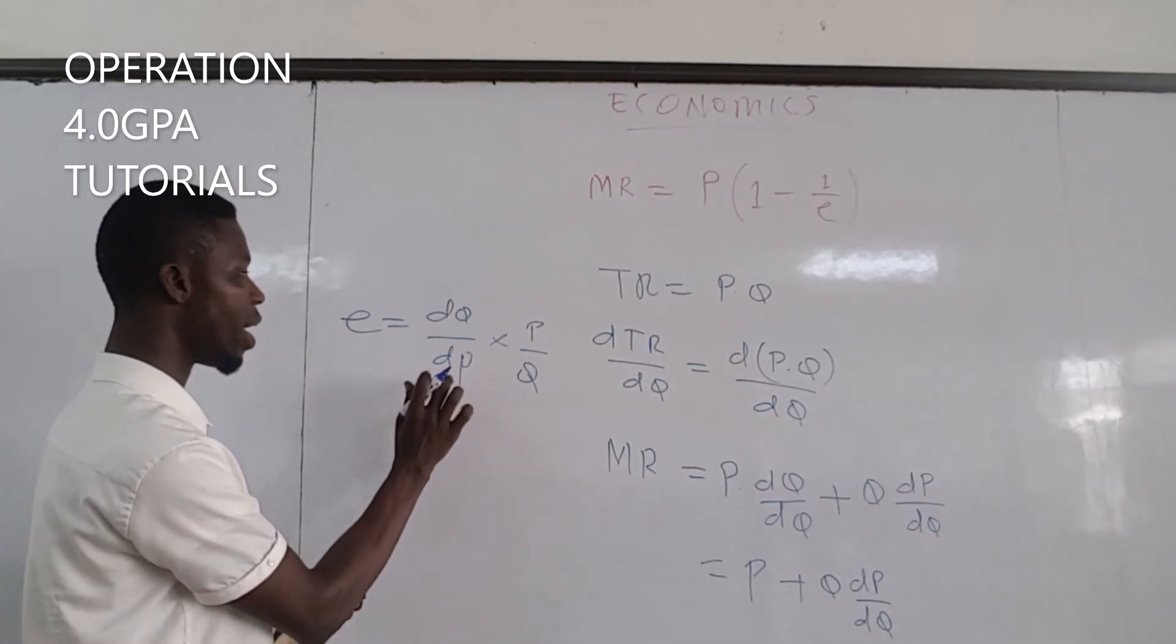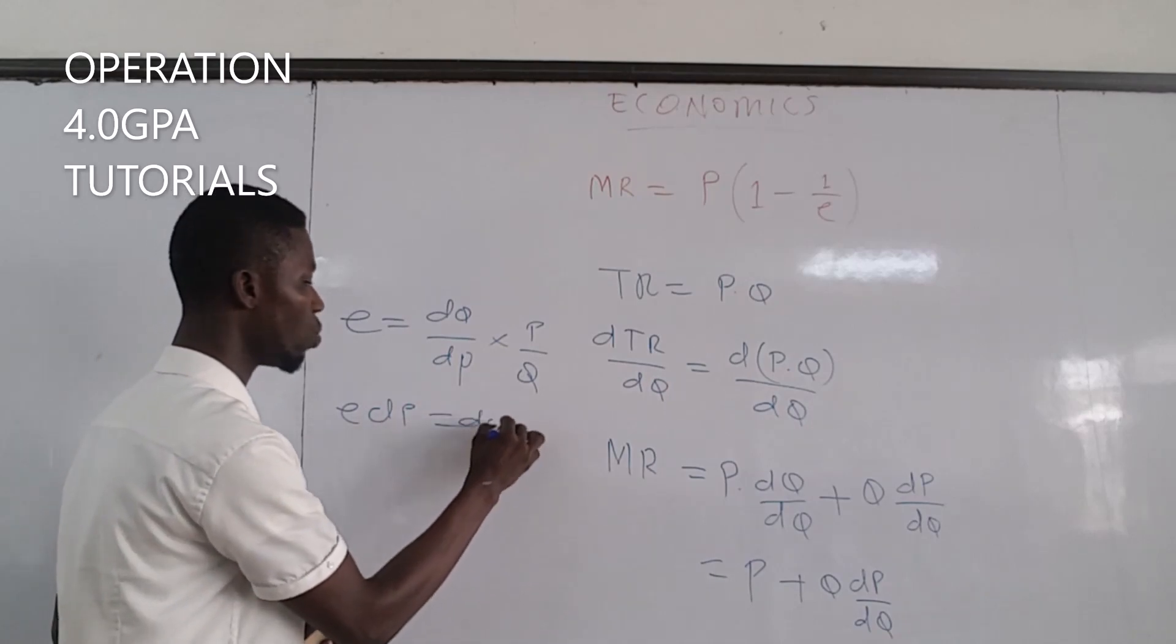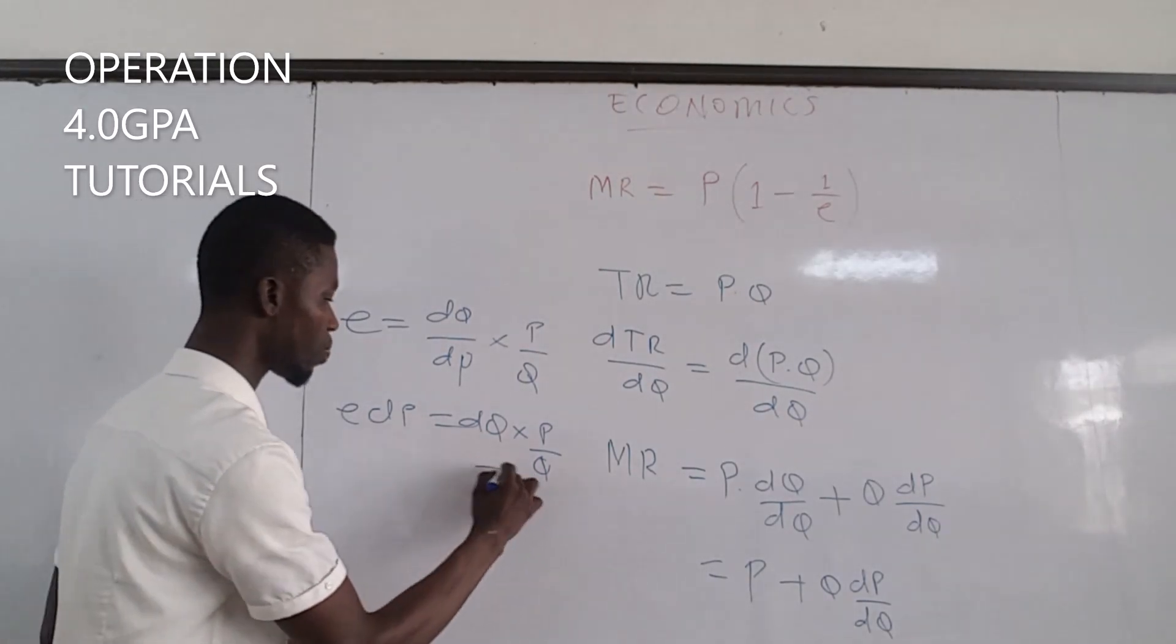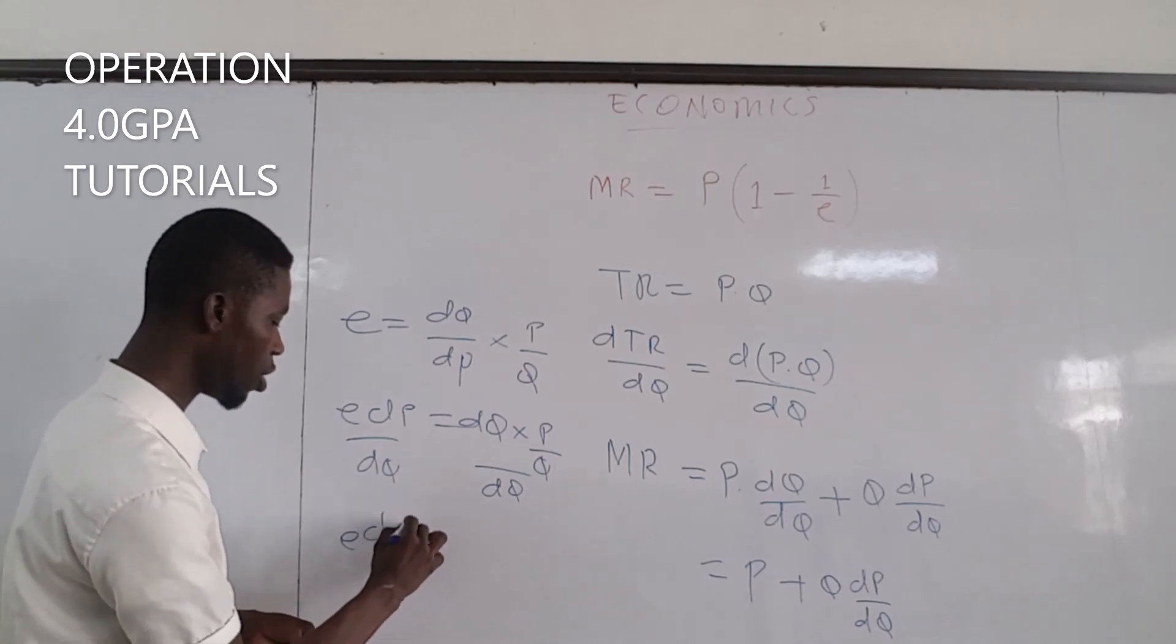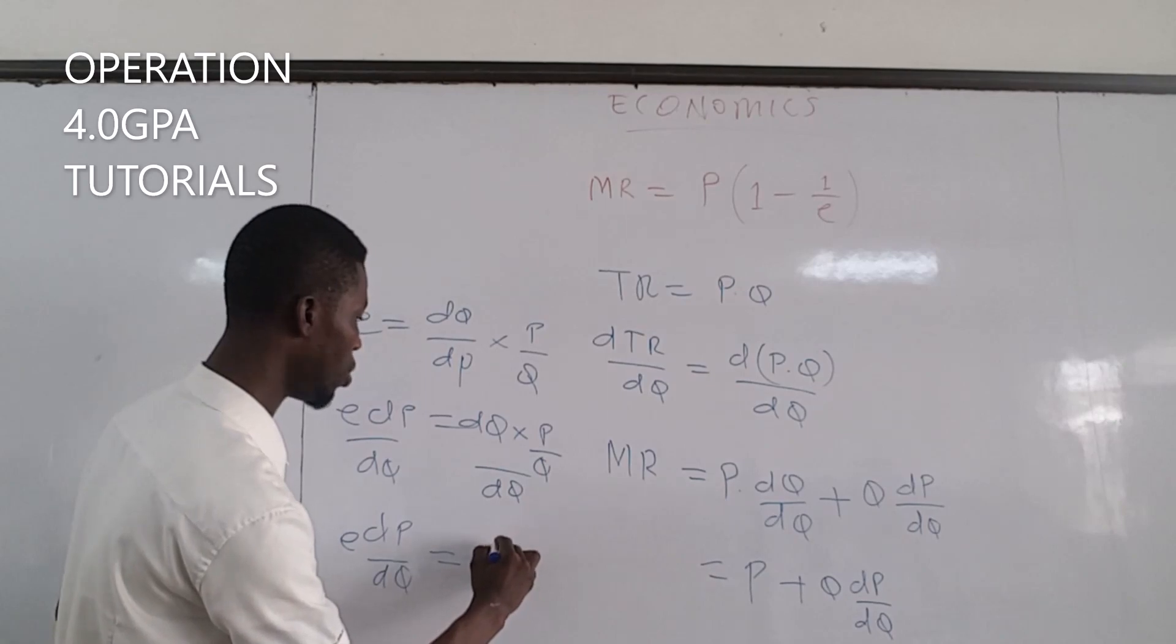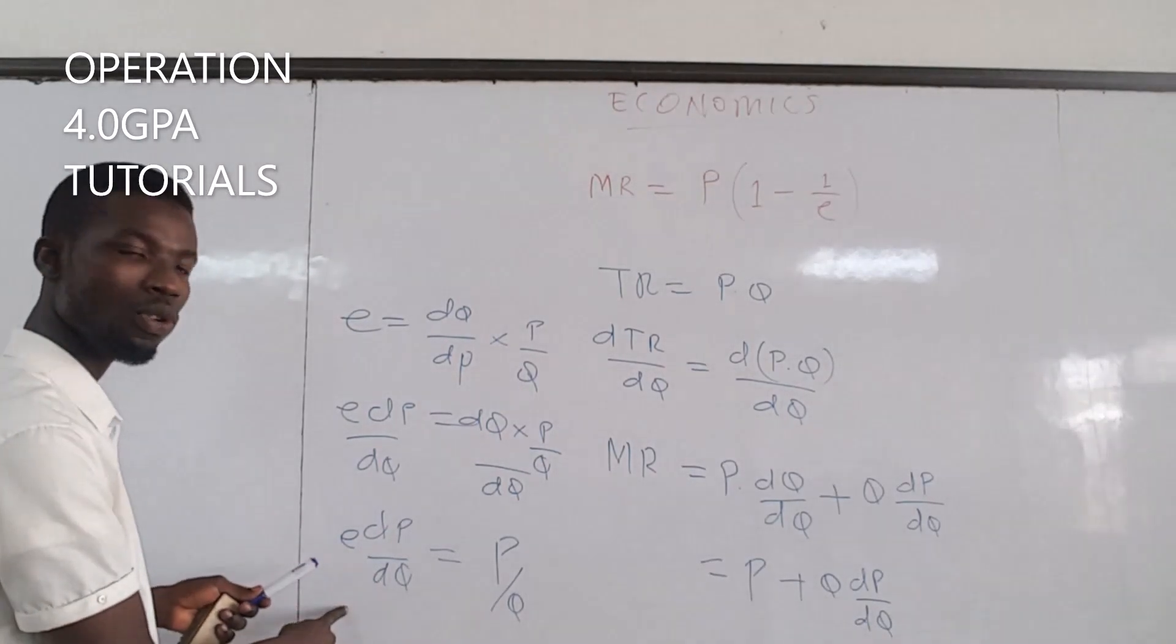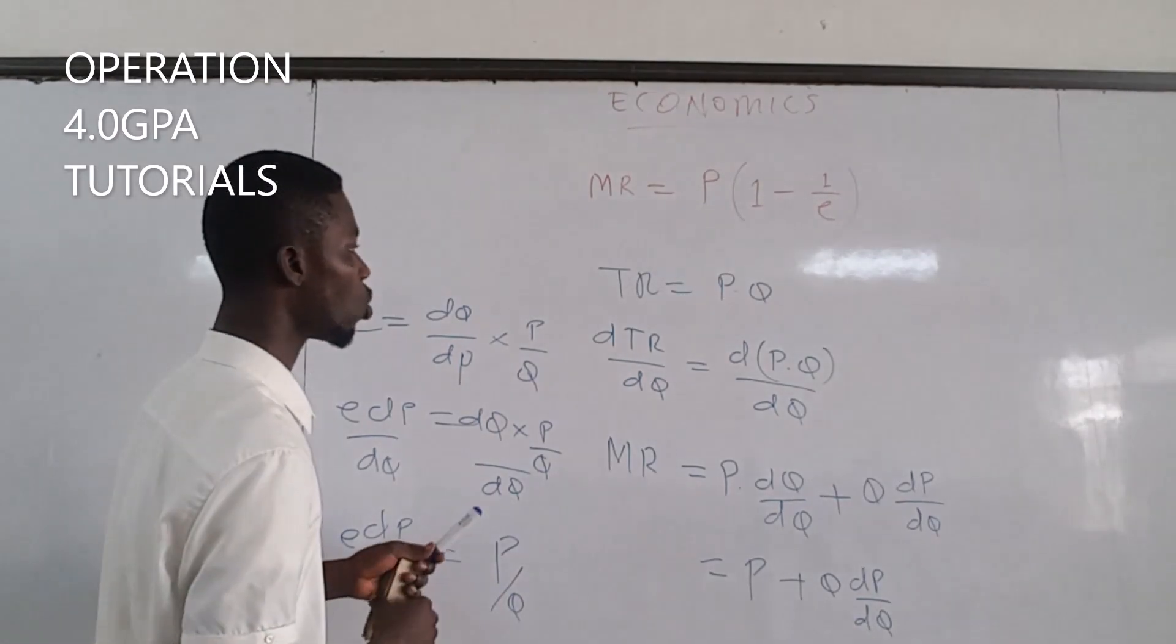We can first multiply it by dP. We have E times dP equals dQ times P over Q. We can also divide it by dQ. This will give us E times dP over dQ, giving us P over Q.